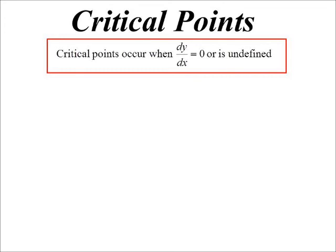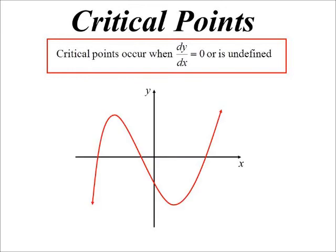Now, if the derivative is undefined, we're going to get a vertical tangent, because the slope would be like infinite. So basically, we're talking horizontal tangents or vertical tangents. So let's look at some examples.